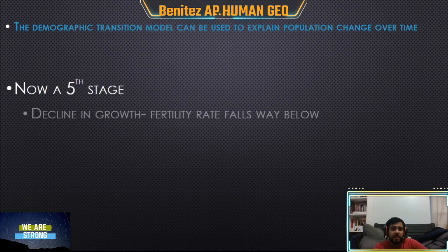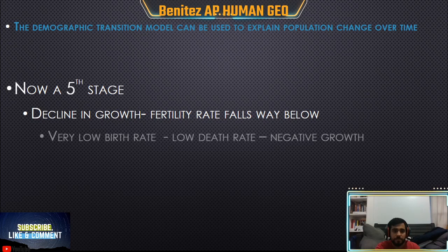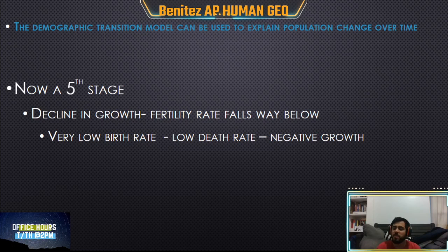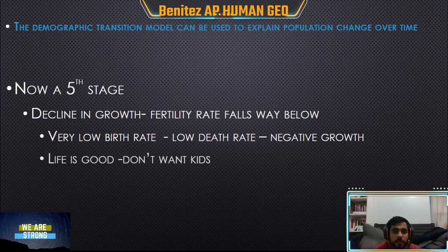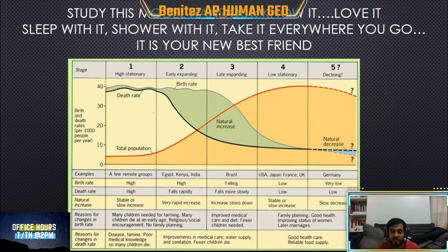Finally, stage five is where there is a decline in growth — more people are dying and families are not having enough kids to replace the people that are dying. Even though there is a low death rate, families are still not having enough kids to replace those dying. The problem with being in stage five is there are too many old people, not enough people working, and not enough kids to keep the society and population alive. If a society does not have kids, the population will eventually die.